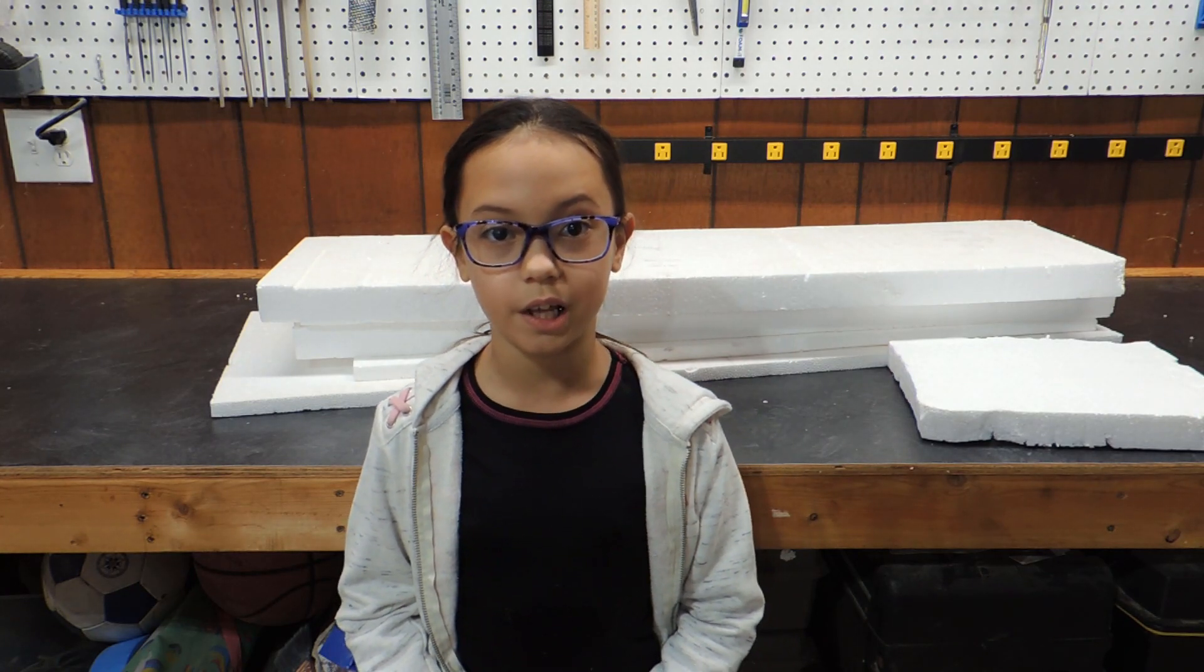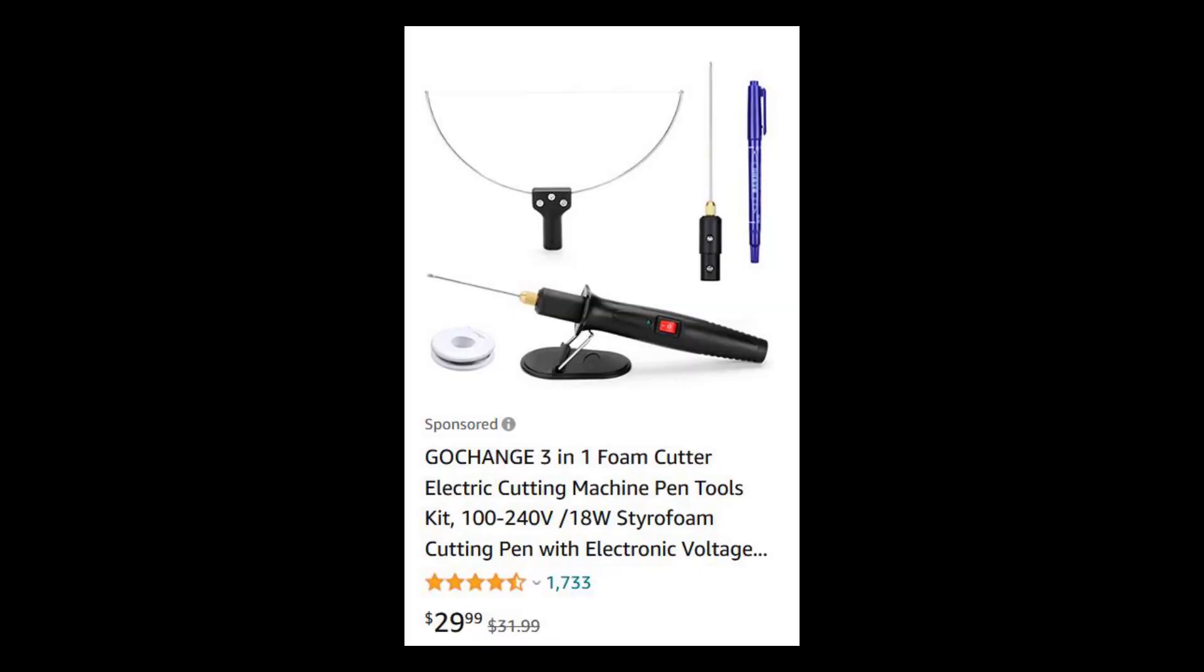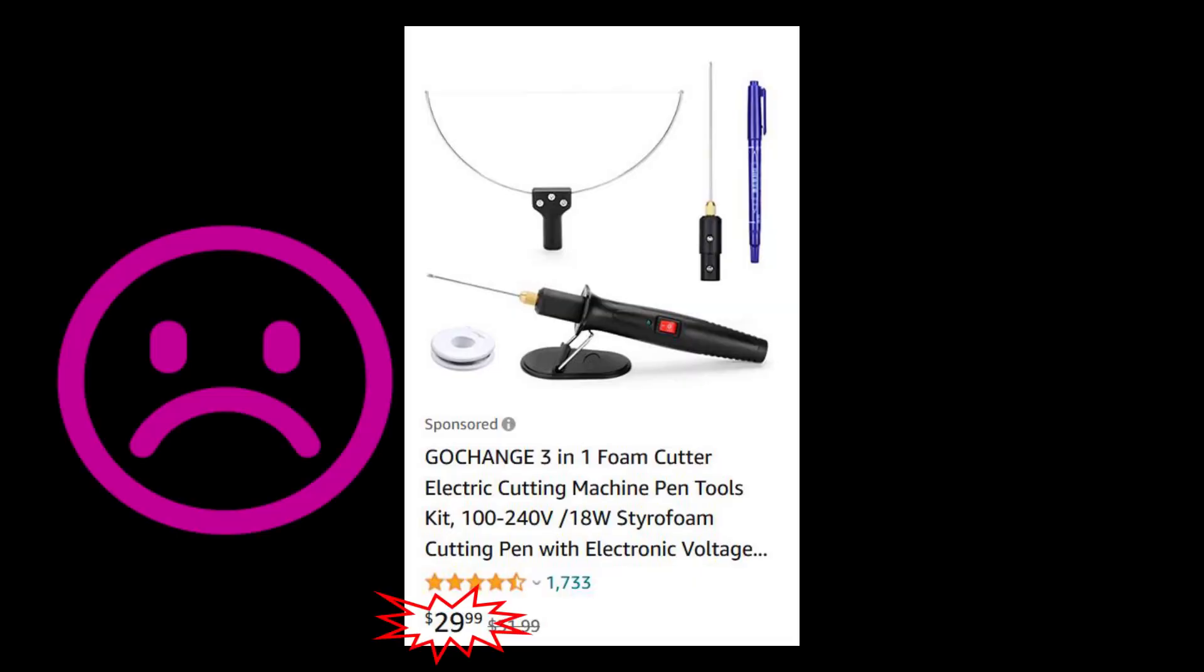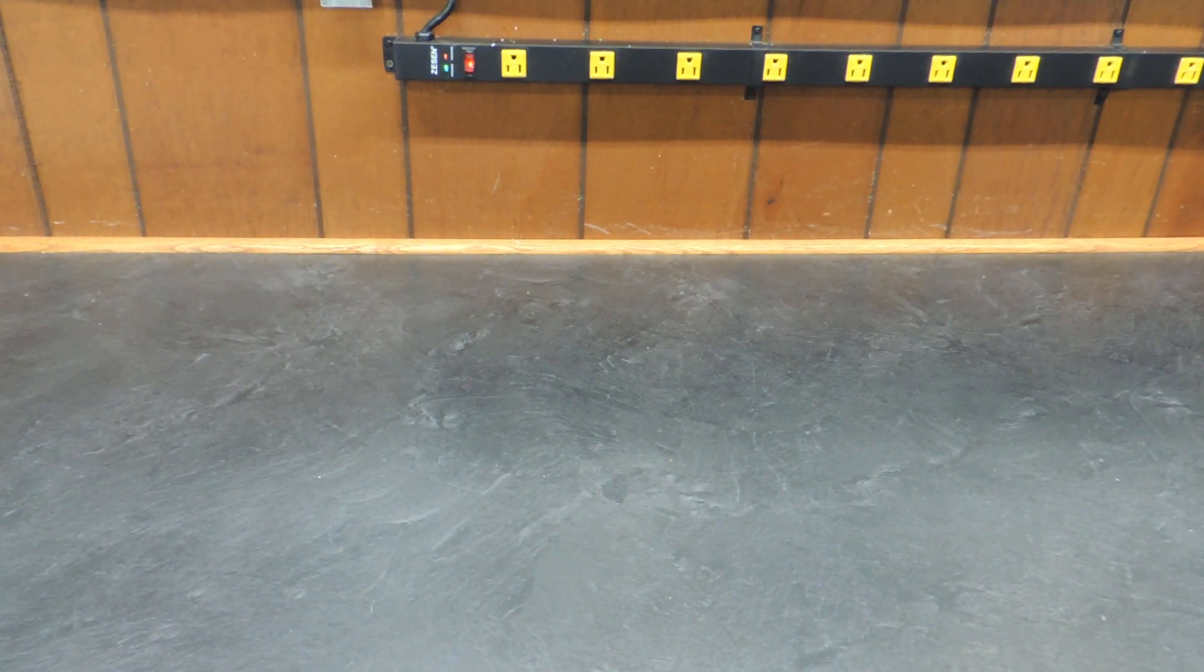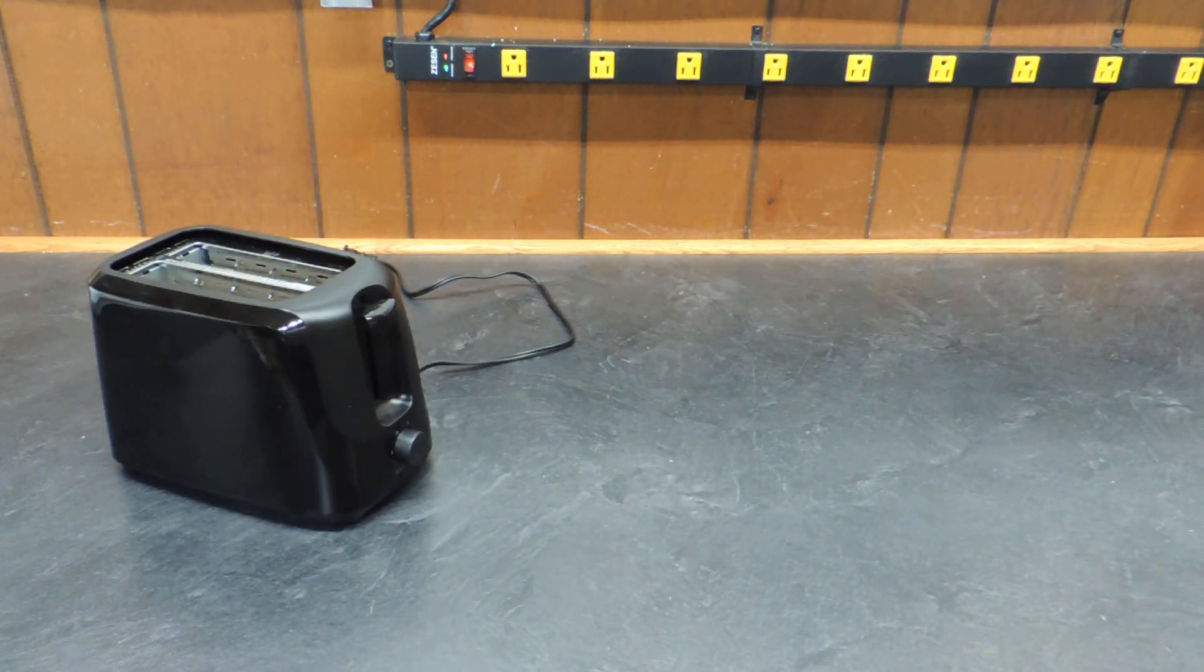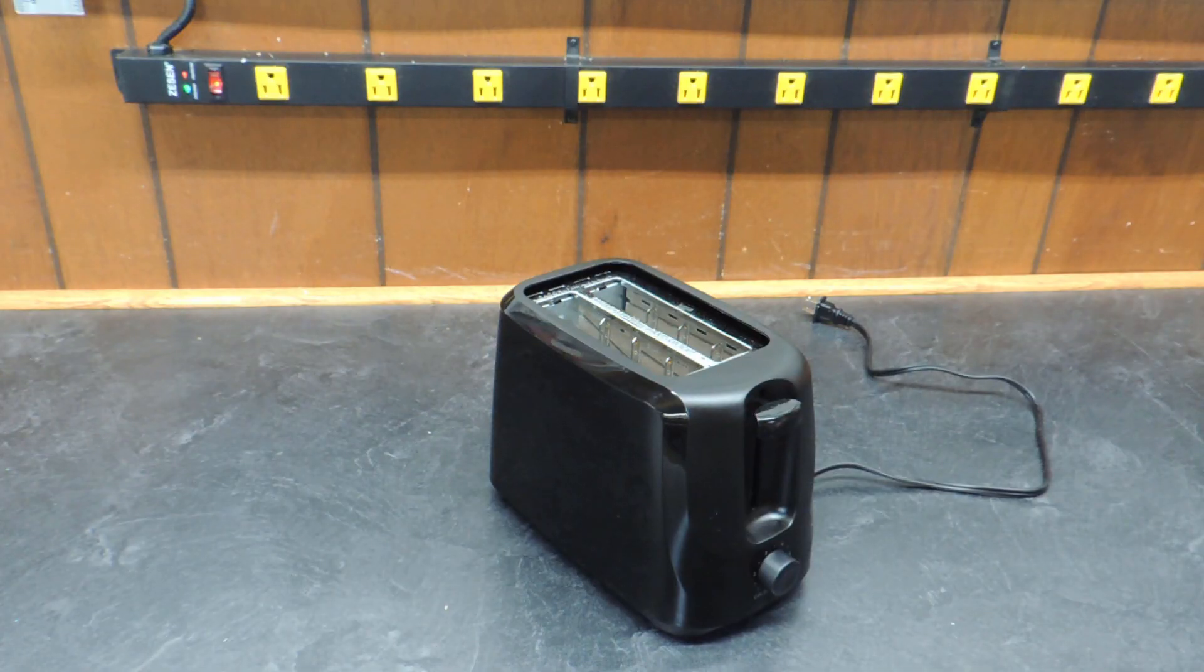They have cutting tools on Amazon, but they're like $30. The wire the tool uses is in a toaster like this one. But how do we get the wire out?